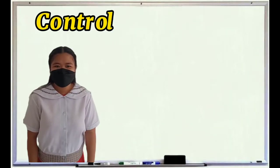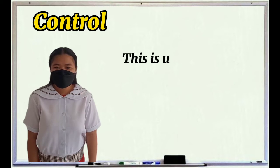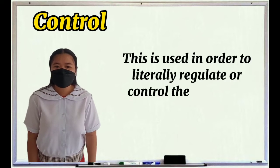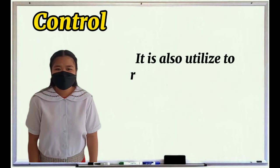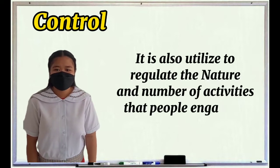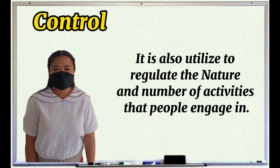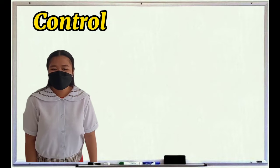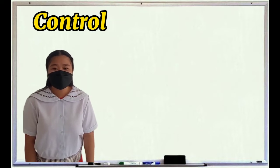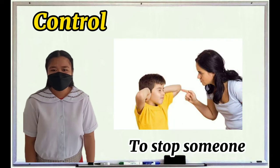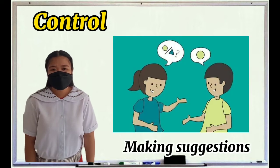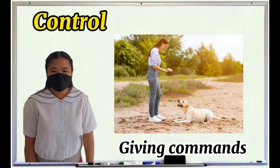The first function is control. Control is used in order to literally regulate or control the behavior of people. It is also utilized to regulate the nature and number of activities that people engage in. You can use this function of communication if you want to ask for clarification, stop someone from what they are doing, make suggestions, or give comments.